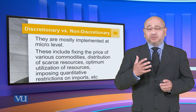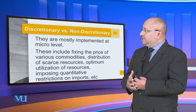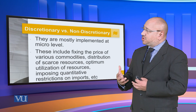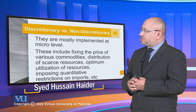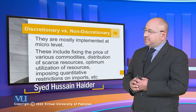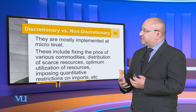Discretionary regulations are mostly implemented at the micro level. These include fixing the price of various commodities, which we see in our markets through regulatory price control committees — the DC, the deputy commissioner, basically does that. Another example is the distribution of scarce resources, such as the Tharparkar situation where water and nutrition were extremely scarce and an emergency was declared.